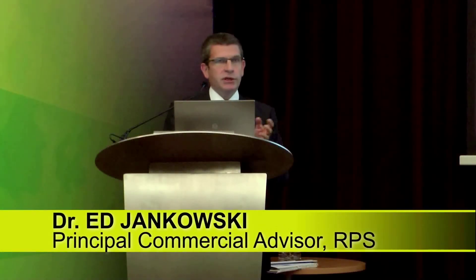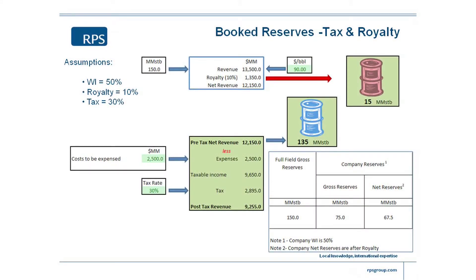This is a complicated diagram, but there's not actually much to extract from this — I just need to illustrate a couple of points. I've assumed here that this particular company has got what's called a working interest of 50% — that's my equity in the project. I've got my field, my gross reserves in that little box are 150 million barrels. This is 2P reserves, one case. In this particular tax royalties setup, I'm paying a royalty of 10% and I've got a tax rate of 30.